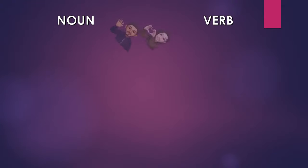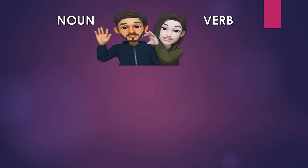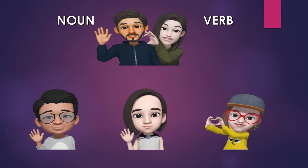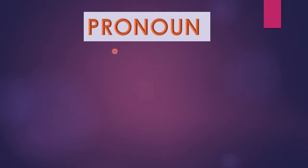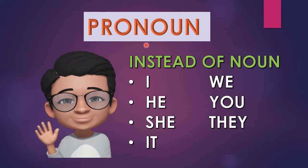Now, this couple — noun and verb — has 3 children: a son and 2 daughters. The name of the son is pronoun. The first daughter is adjective and the second daughter is adverb. First comes pronoun. This boy is always very careful. Whenever his father leaves the family for some work, he takes care of the family and does all the work his father was doing. Like that, in a sentence, when the noun is not there, pronoun is used instead of a noun.